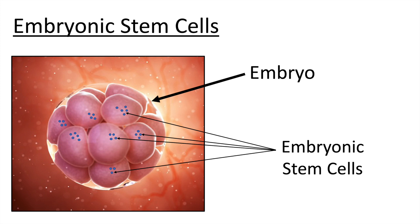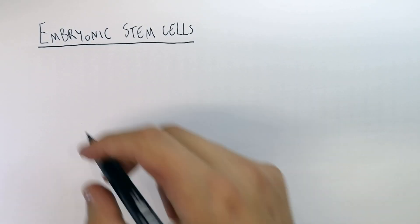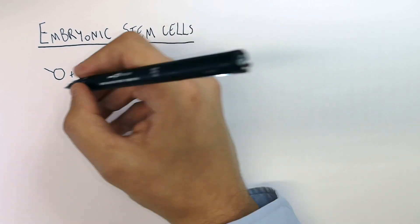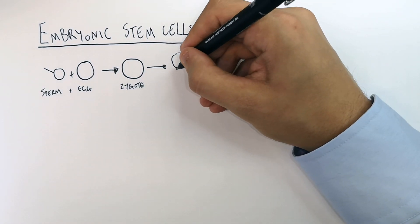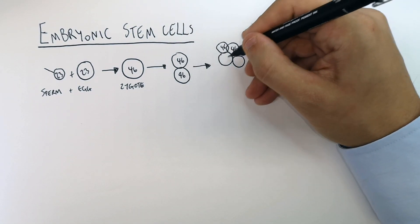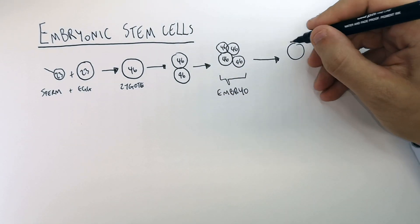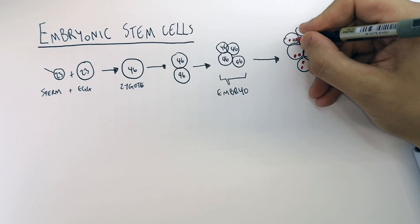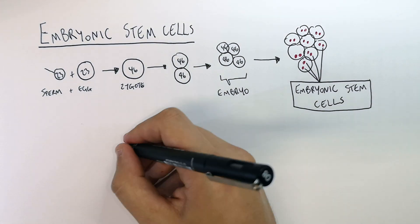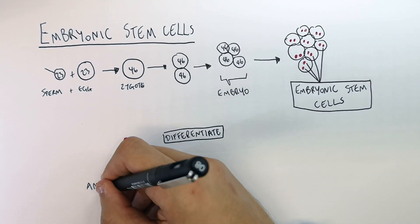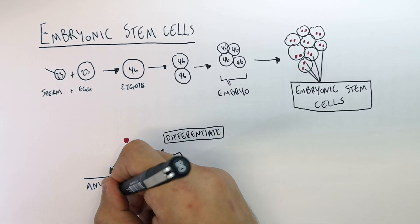Embryonic stem cells are one of the most powerful tools in medicine right now. They will differentiate into any cell of the body and can replace any cells of any tissues in the human body. A sperm fertilizes an egg forming a zygote, which then undergoes mitosis to produce an embryo. Inside the embryonic cells are embryonic stem cells, and these embryonic stem cells can differentiate into any cell of the body.